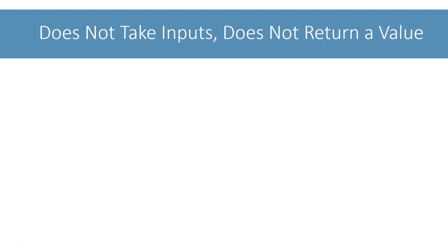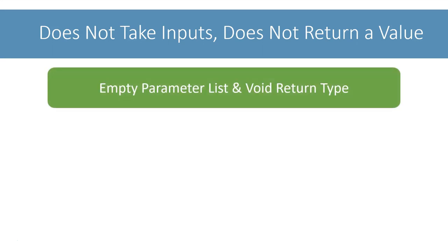We will see examples of methods that don't take any input and don't return a value. These methods are characterized by an empty parameter list and void return type.